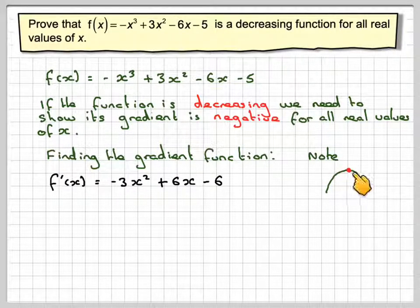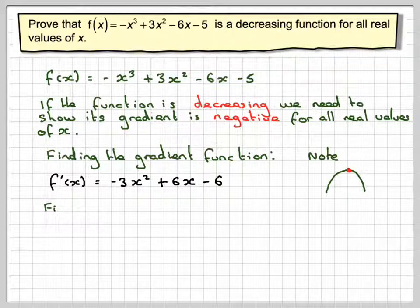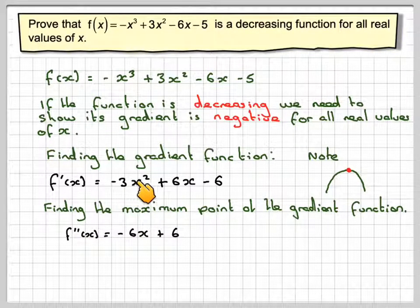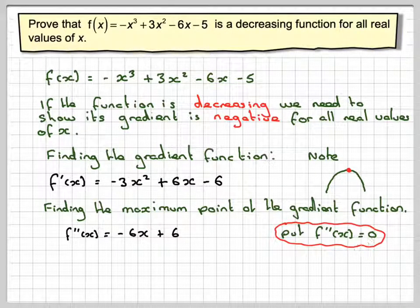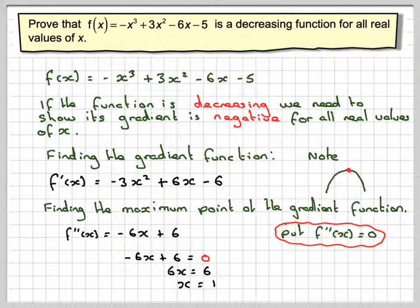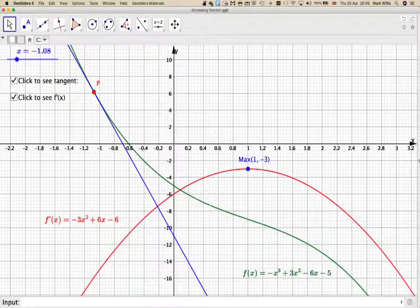What we're going to do is find the y-coordinate, or the f' coordinate, of the maximum point. To do that we differentiate again: f''(x) = -6x + 6. To find the maximum, we set it equal to 0. So -6x + 6 = 0, giving 6x = 6, so x = 1. The x-coordinate of this maximum point is 1.